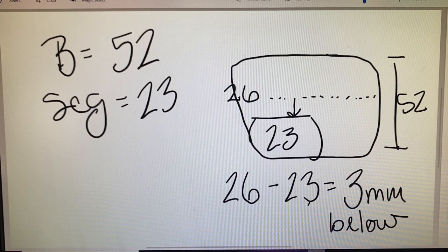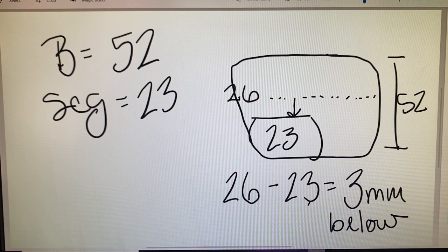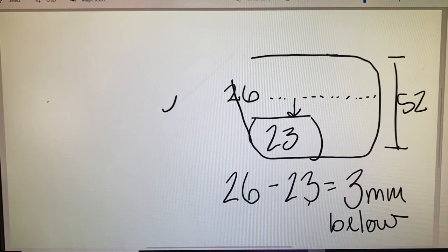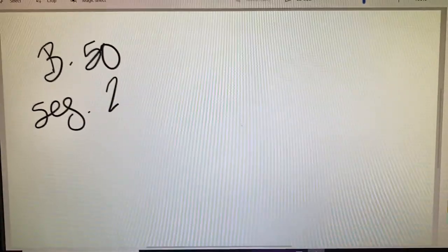Now, let's take a look at number 11. We can end up in a situation where the seg height is actually placed above the datum line, and number 11 shows us that example. So in this scenario, we do have a b-measurement of 50 and a seg height of 28.